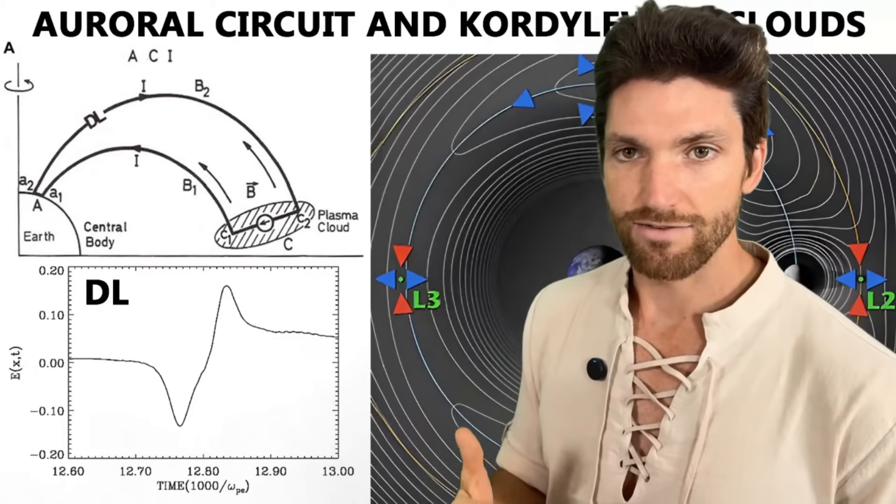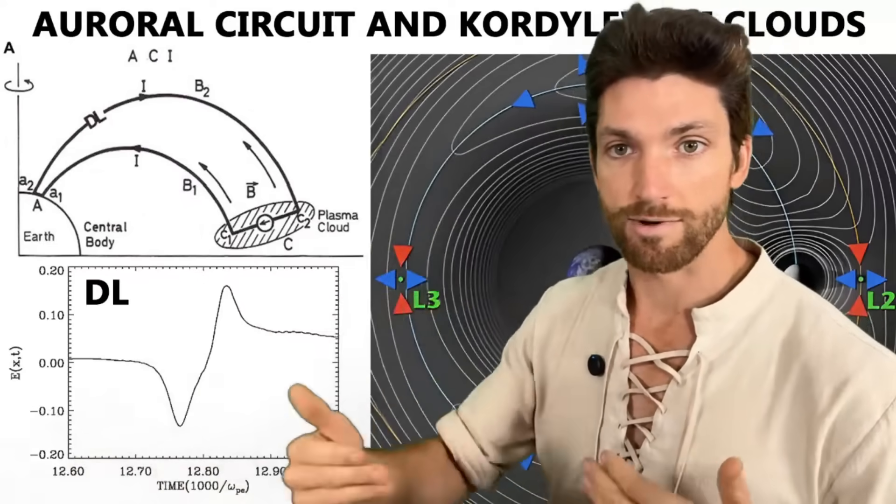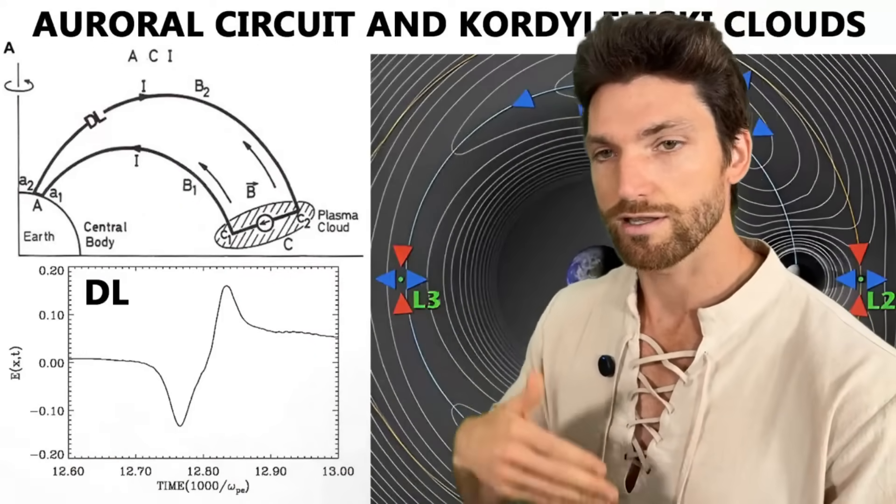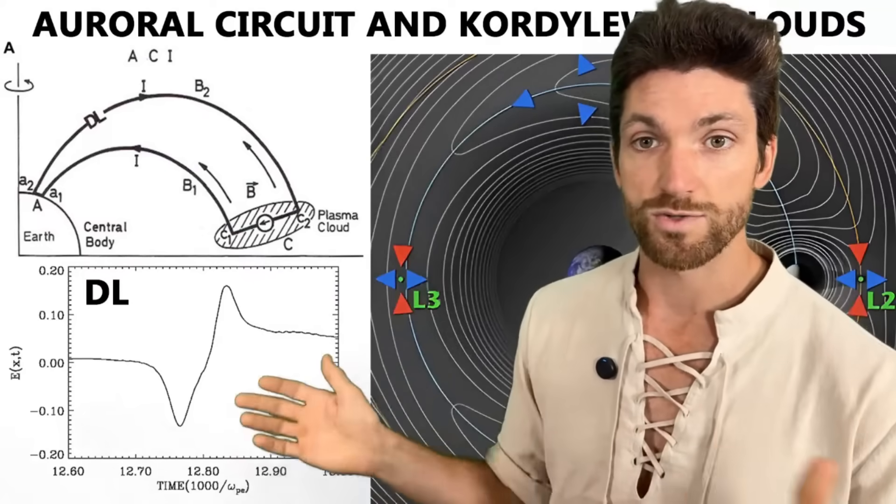Because geomagnetic activity and the aurora and therefore the magnetic field swings that register at the surface is all based on these electric circuits. And so the stronger the electric circuit, the more flow there is, the more current there is. And therefore, the stronger the magnetic field swings that are generated.